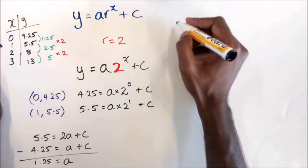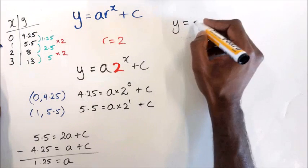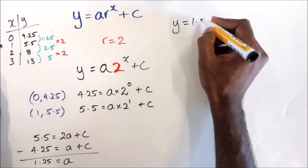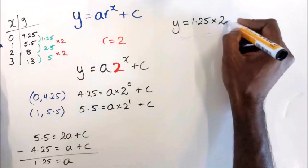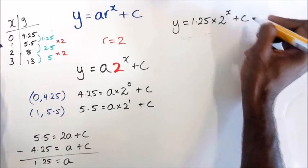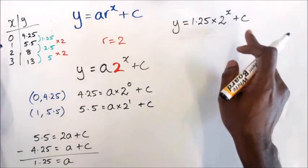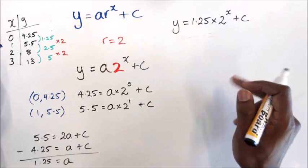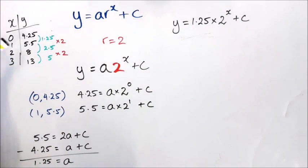I'm going to write down my equation: y equals 1.25 times 2 to the power of x plus c. I still need to figure out what the c value is. To find c, you could choose any one of these points from the table.